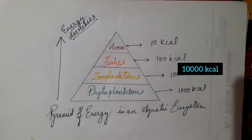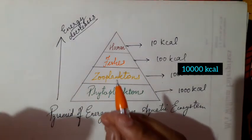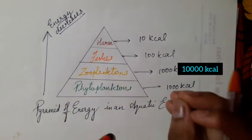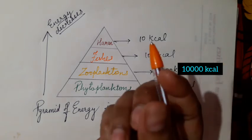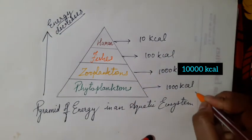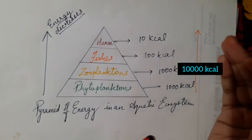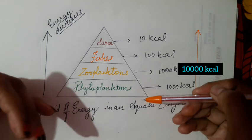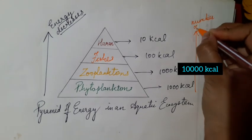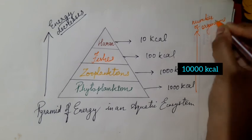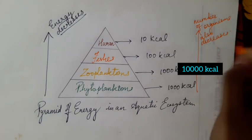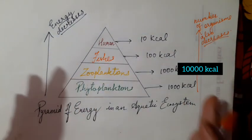Apart from the energy, the number of organisms is also decreasing. The phytoplankton is very great in number—we cannot even imagine. In a small bulk we can get thousands and millions of phytoplanktons. So the number of the organisms is also decreasing in this pyramid as it is going from the lower level to the higher level. So we can say that the number of organisms also decreases. So this was all about the pyramid of energy.